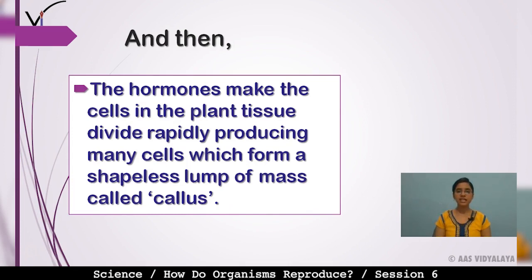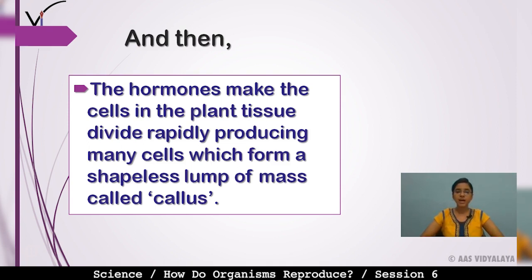The hormones make the cells in the plant tissue divide rapidly, producing many cells which form a shapeless lump of mass called callus.